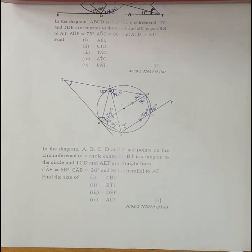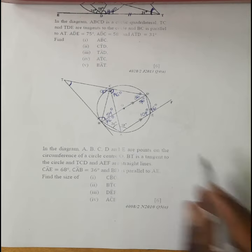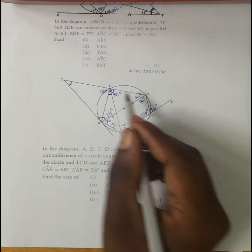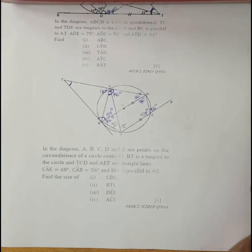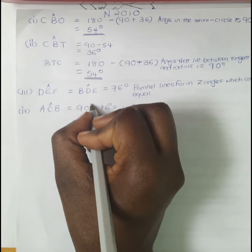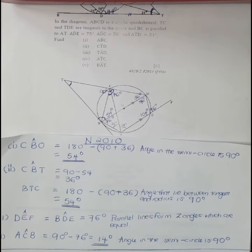Finally, for Part 3: DEF equals BDE equals 76 degrees because parallel lines form equal Z-angles. For angle ACB: the angle in a semicircle is 90 degrees, so ACB equals 90 minus 76, which equals 14 degrees. This was the complete solution for November 2010. Show working and state the theorems supporting your answers.